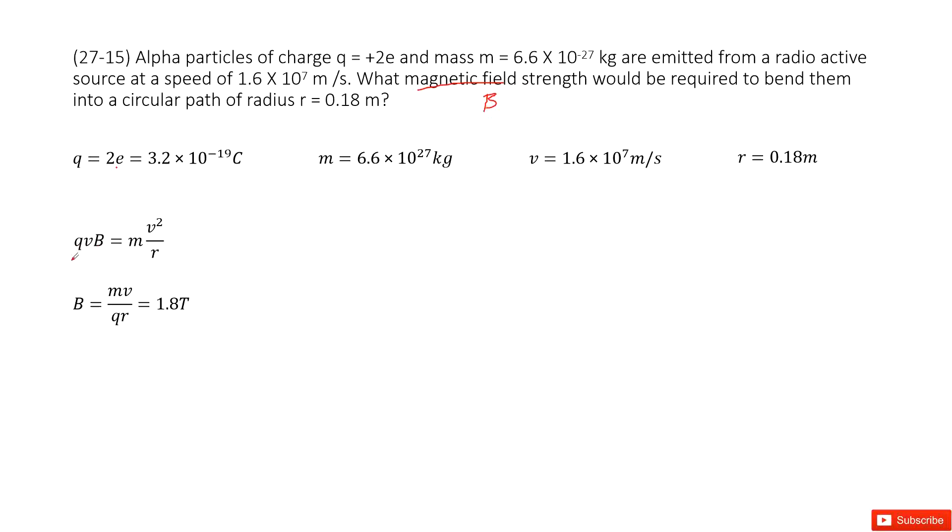So the centripetal force is the Lorentz force qvB. And then the mass times the centripetal acceleration v squared divided by r. Then we can get the function for B as mv divided by qr, and inputting all the given quantities, we get the answer.